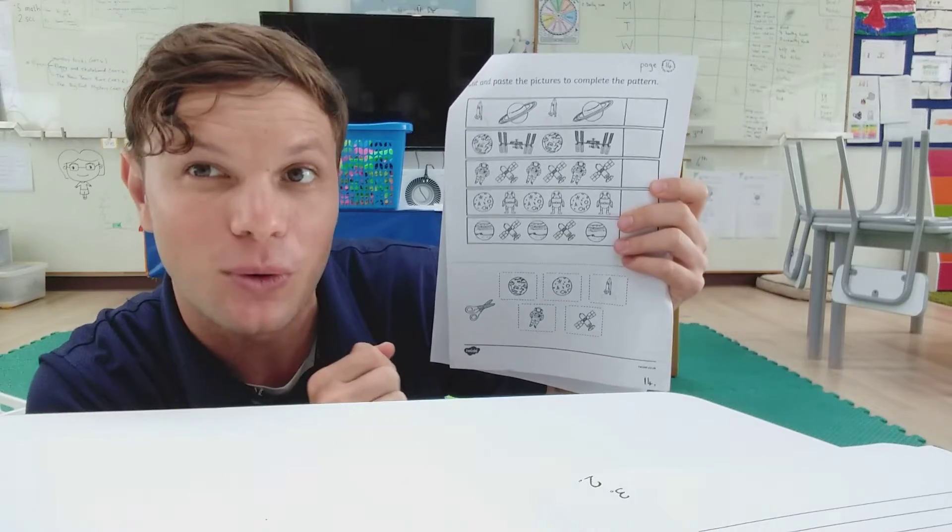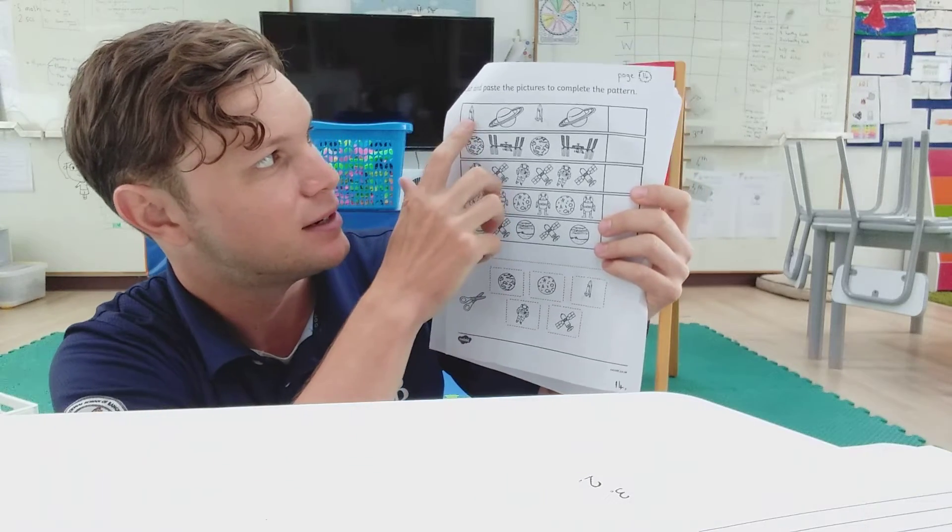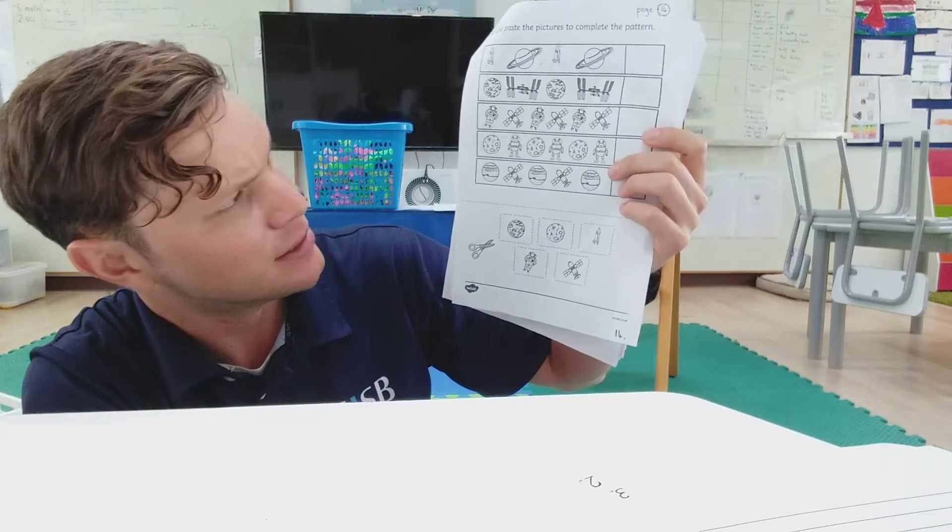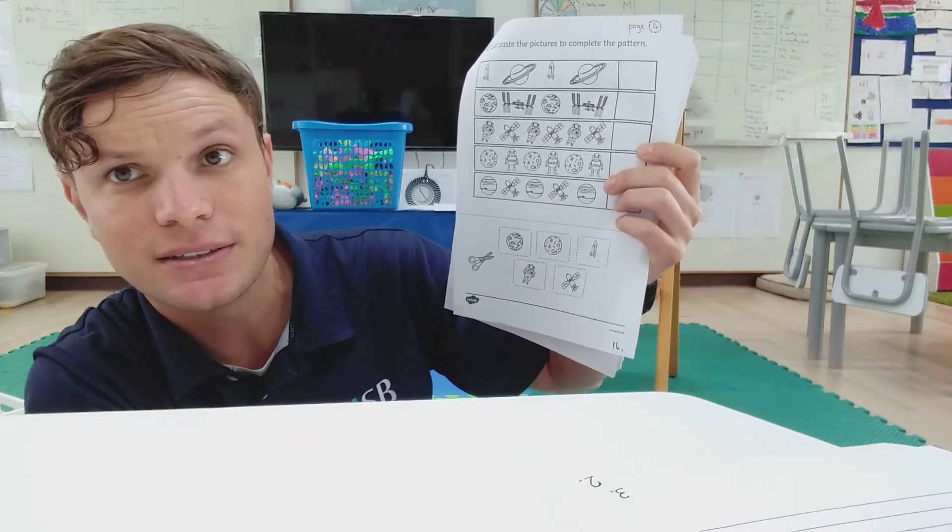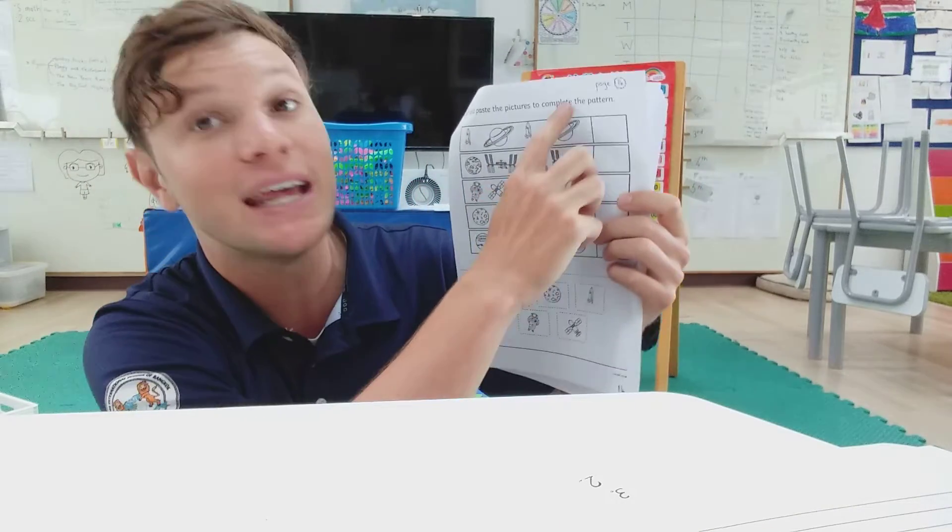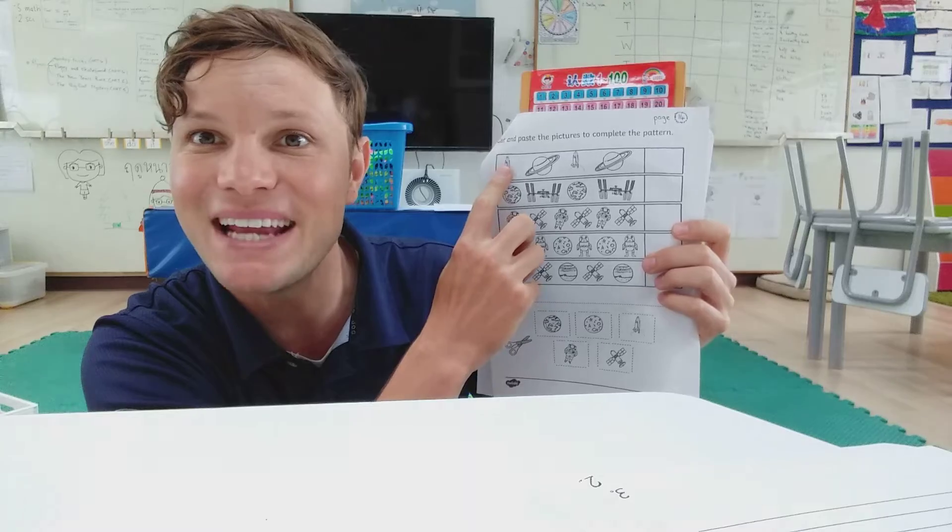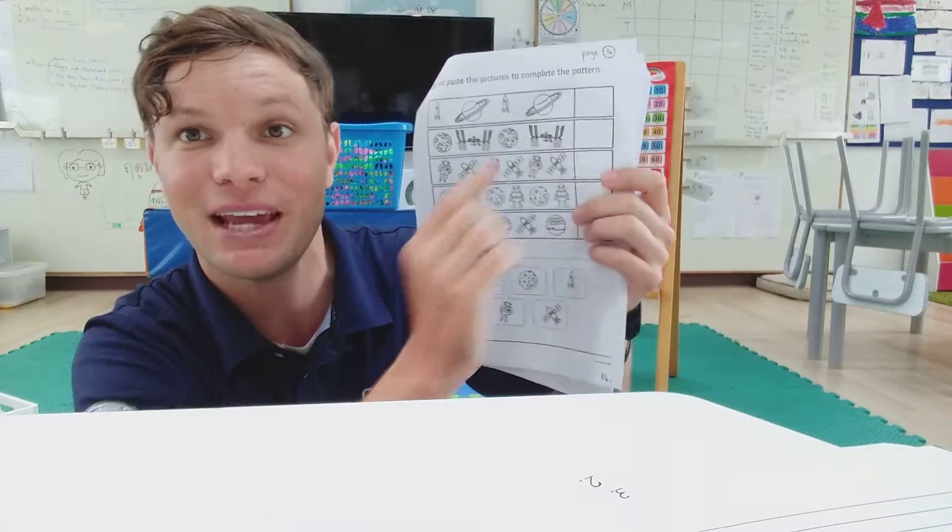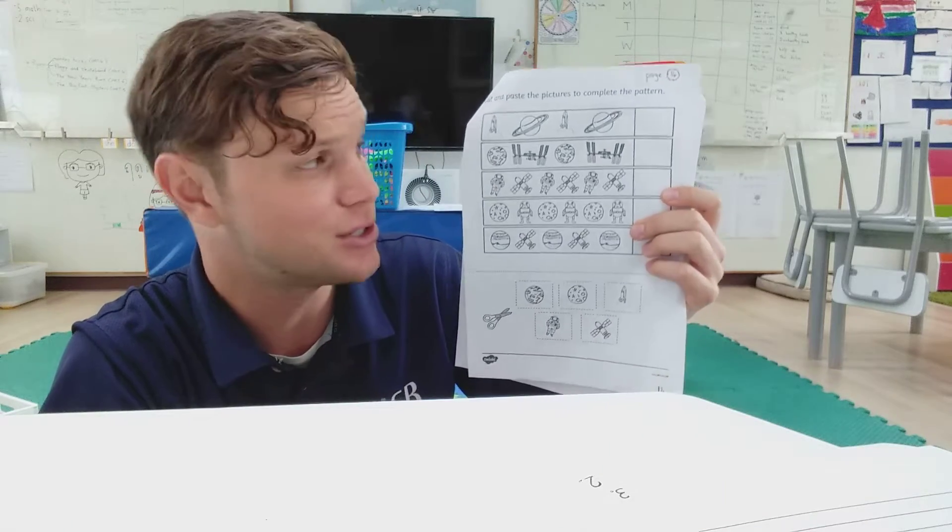So let's look at number one together. Spaceship planet. Spaceship planet. So what do you think is going to be next? Spaceship planet. Spaceship planet. A spaceship, right? So then we cut out spaceship and we stick spaceship here. Let's look at the second one together.